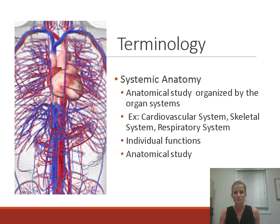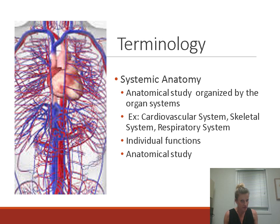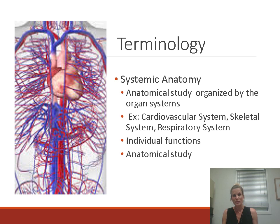You need to understand what clinical anatomy is. Systemic anatomy is the anatomy you probably studied in undergrad — the study of organ systems. You probably studied the cardiovascular system together: the heart, blood vessels, blood, the skeletal system, the respiratory system, lymphatic. In my undergrad A&P, we organized it by body system. When studying systemic anatomy, you're looking at the individual anatomy and function of that system and that system alone.